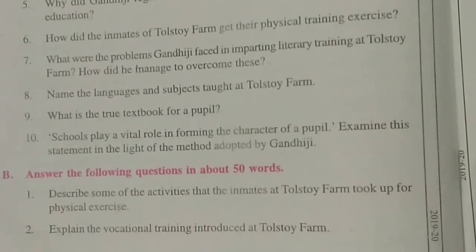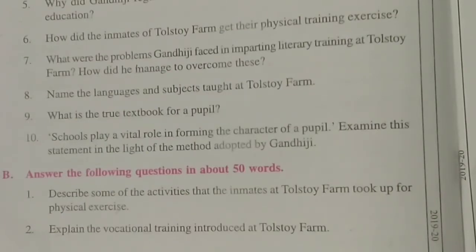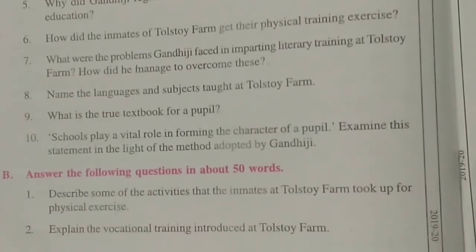Question number two: explain the vocational training introduced at Tolstoy Farm. The answer is: at the Tolstoy Farm, Gandhi ji introduced shoemaking, carpentry, and cooking. Mr. Kallenbeck learned it from a Trappist monastery, Gandhi ji learned it from Mr. Kallenbeck, and now he was teaching it to others who were ready to learn. There were two inmates who had some knowledge of carpentry, so they had a small class on that subject too. Cooking was known to almost all youngsters.